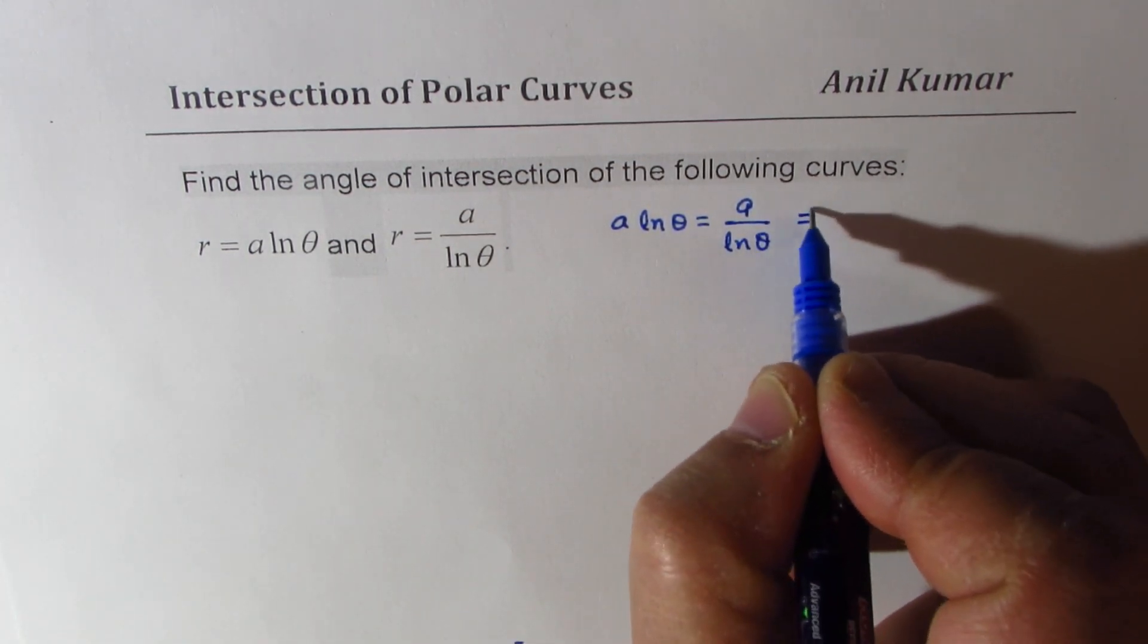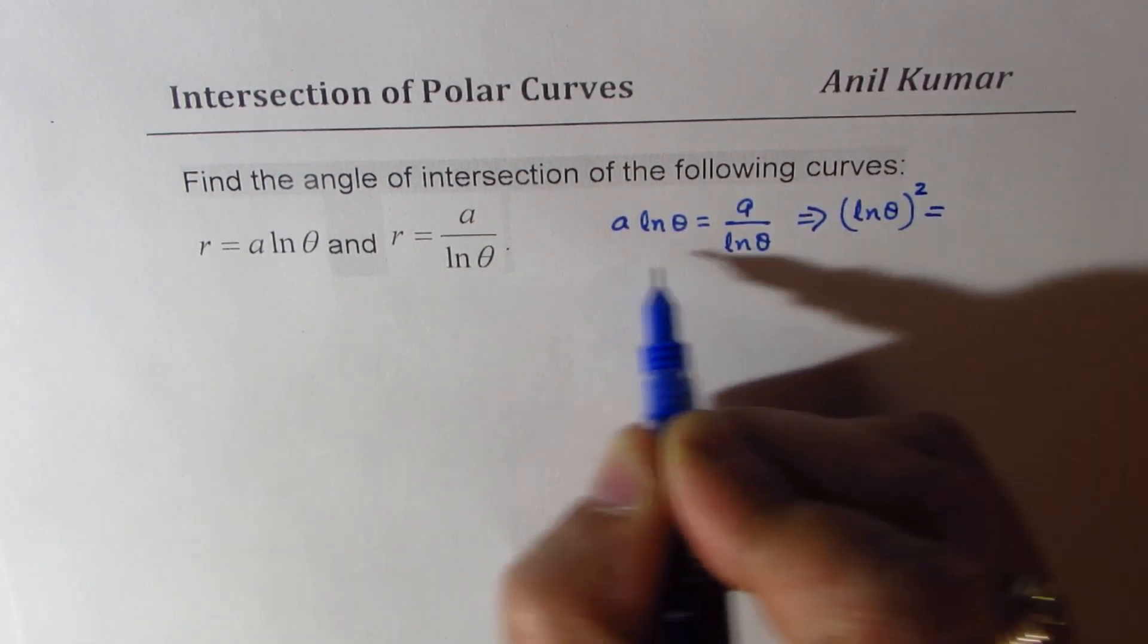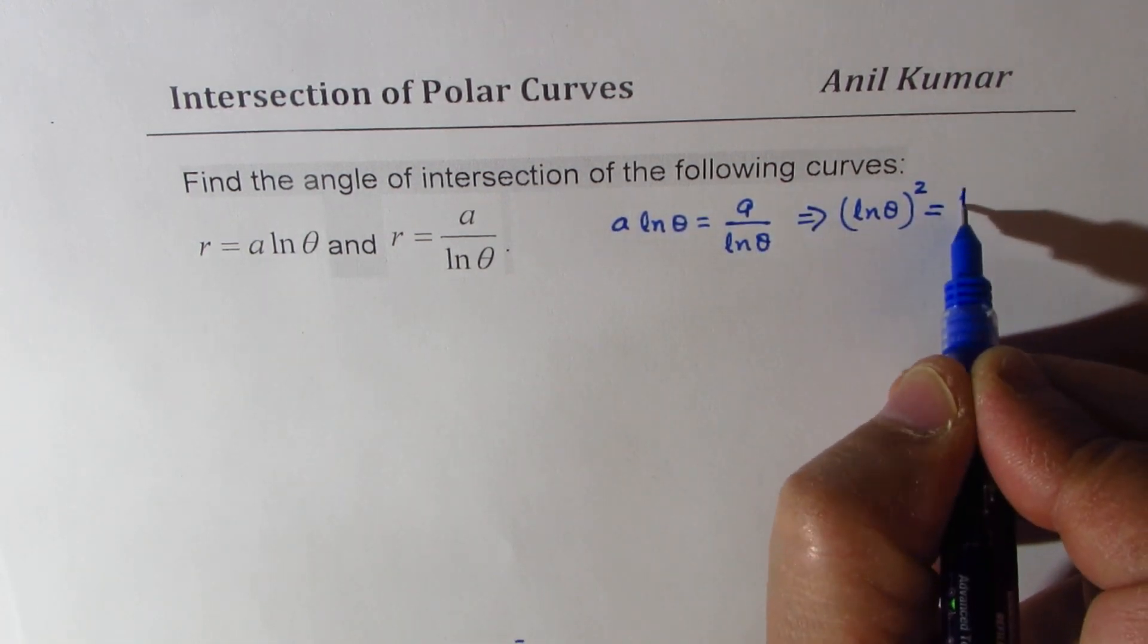So that gives you that ln theta squared is equal to a divided by a, which is 1.